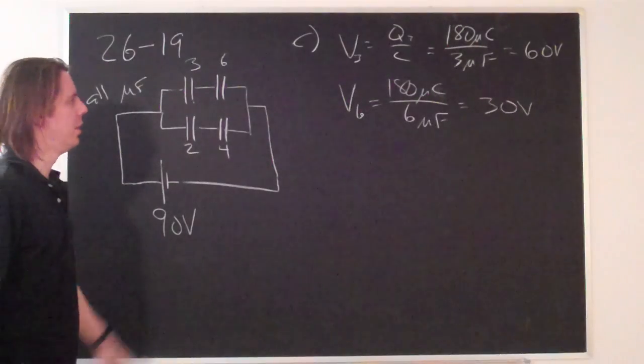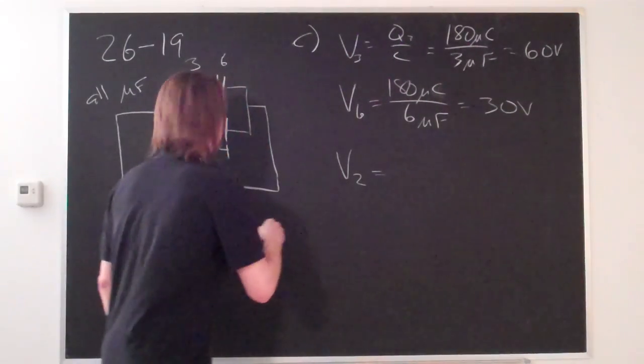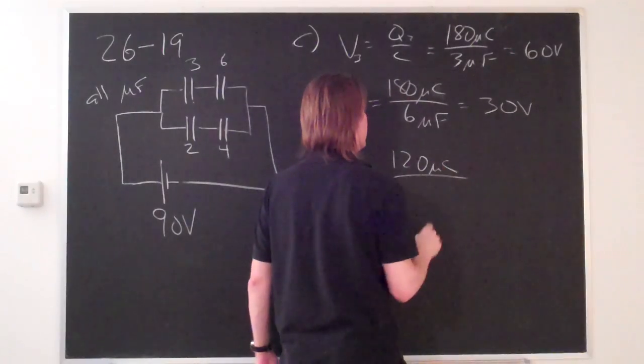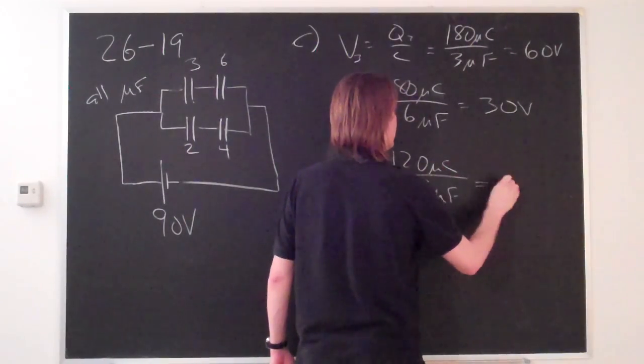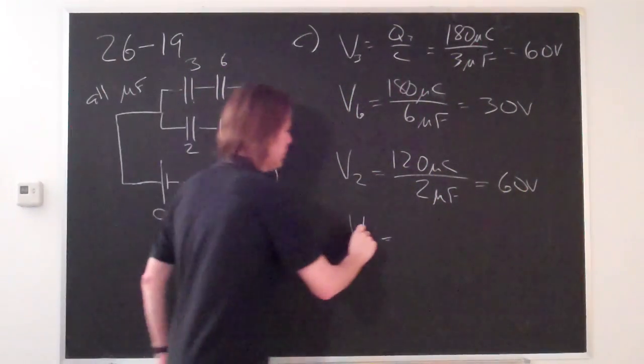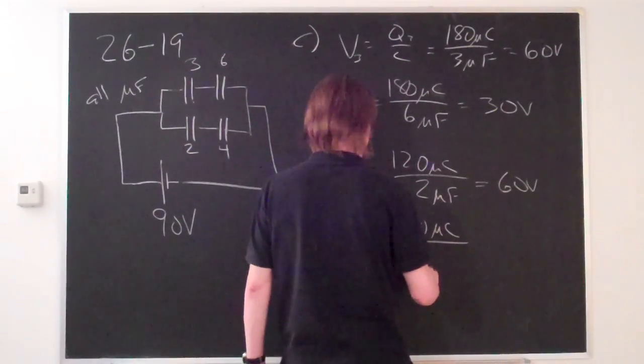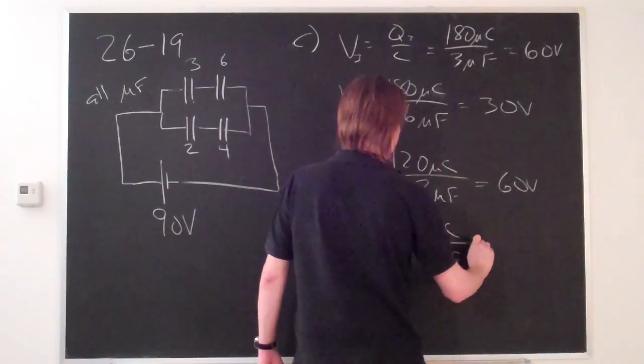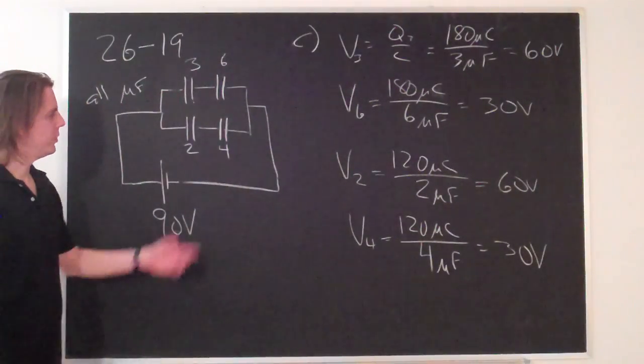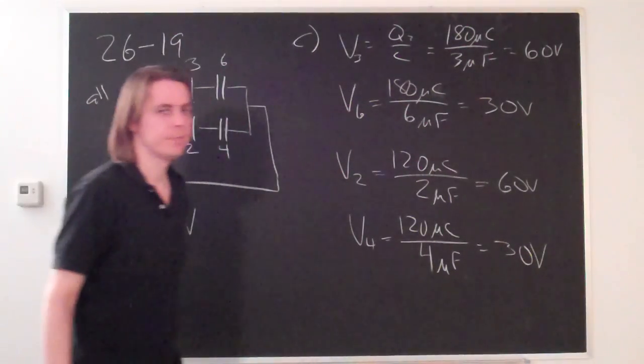The voltage drop across the 2 microfarad was 120 microcoulombs over 2 microfarads, also 60 volts. And then the voltage drop across 4 is 120 microcoulombs over 4 microfarads, 30 volts. Again, we drop 60 and then we drop 30, and it totals up to 90. That's it.